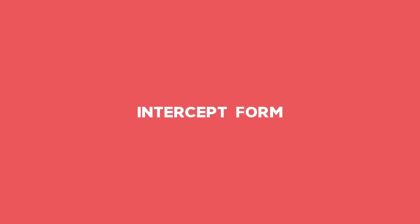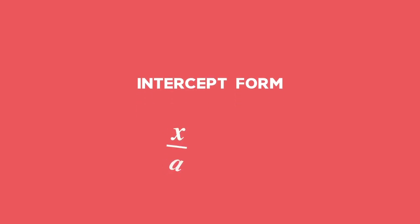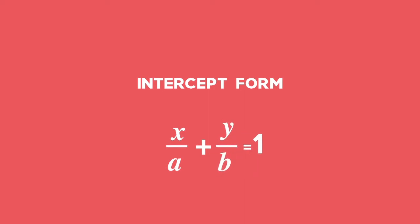The third one, which is not used very often, is the intercept form: x divided by a, where a is the x-intercept, plus y divided by b, where b is the y-intercept, equals 1.